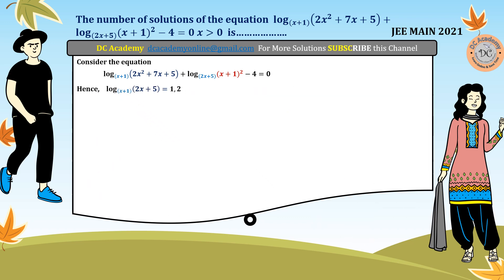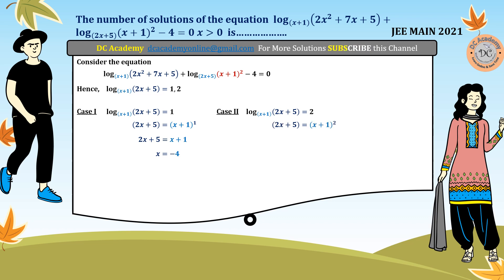We have two cases. Case 1: t = 1, so log(2x+5) base (x+1) = 1. By the definition of logarithm, 2x+5 = (x+1)^1, giving x = -4. Case 2: t = 2, so 2x+5 = (x+1)². Expanding: (x+1)² = x² + 2x + 1, so 2x+5 = x² + 2x + 1. Simplifying gives x² = 4, hence x = ±2.